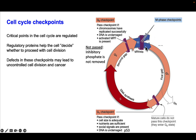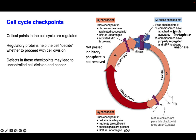M phase has two checkpoints. The first checks whether, during metaphase, every single chromosome has attached to the spindle apparatus — determining whether the cell will go from metaphase into anaphase. If even a single chromosome is not attached, those cells will arrest in metaphase. The second M-phase checkpoint occurs during the anaphase-to-telophase transition, checking whether chromosomes have properly segregated and that MPF is absent.